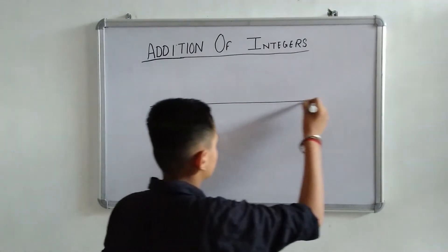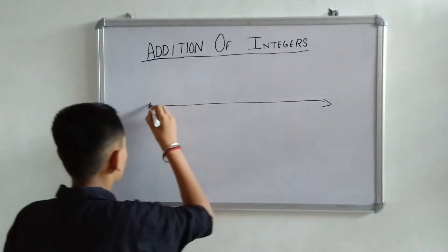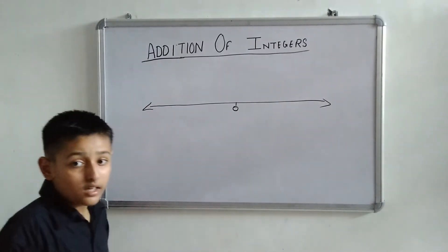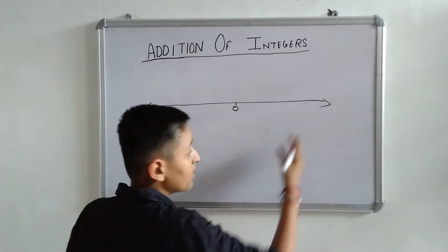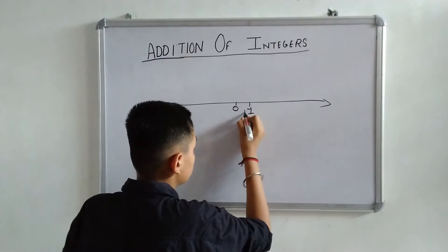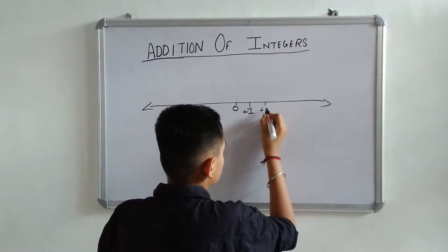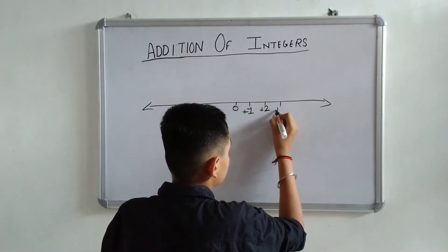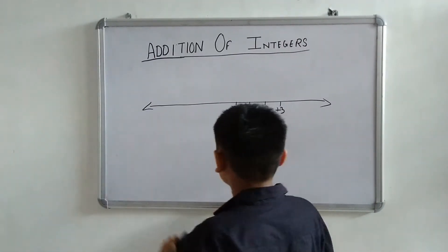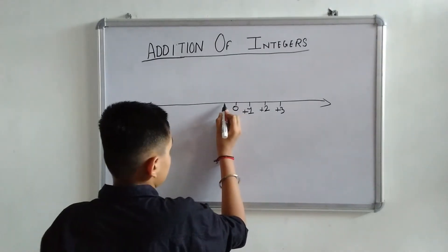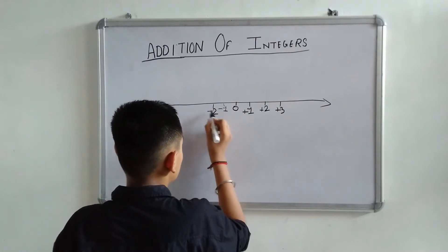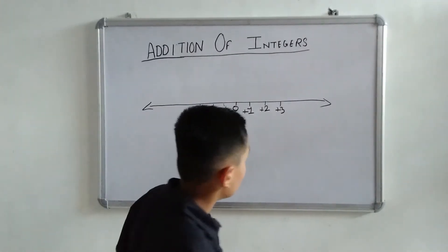First, make a line. Take a point in the middle, 0. On right-hand side are positive integers: 1 means plus 1, plus 2, plus 3. On left-hand side, there are negative integers like minus 1, minus 2, minus 3.